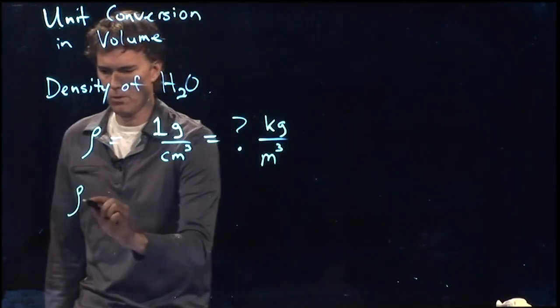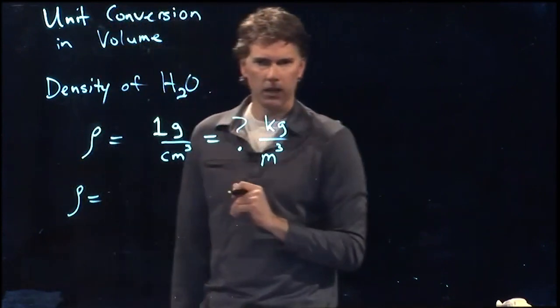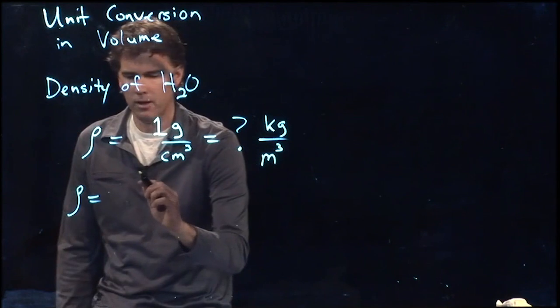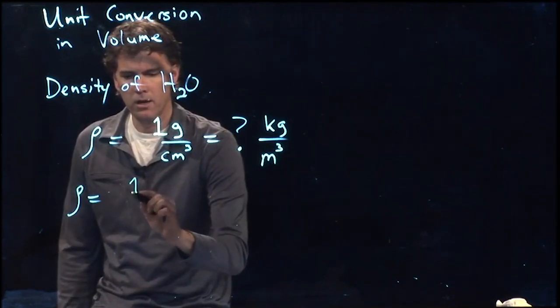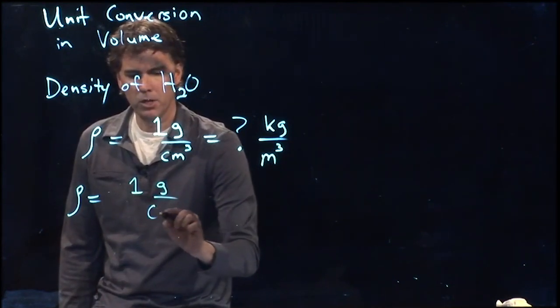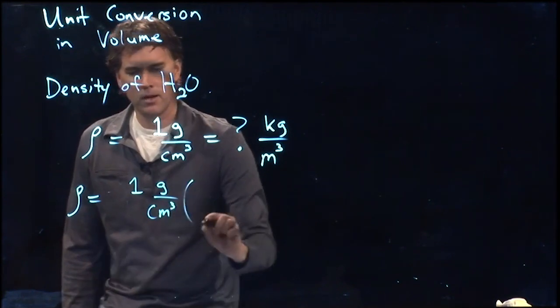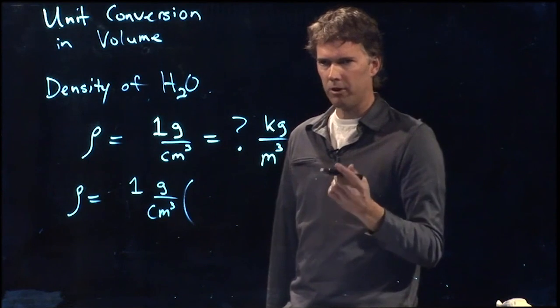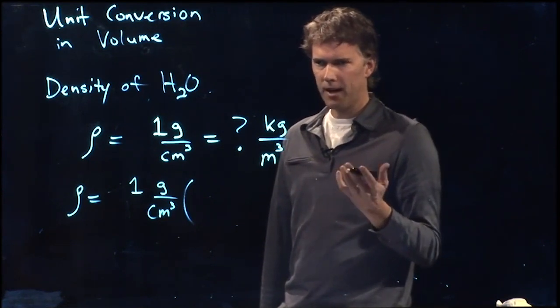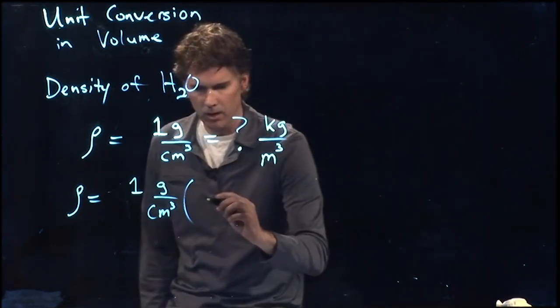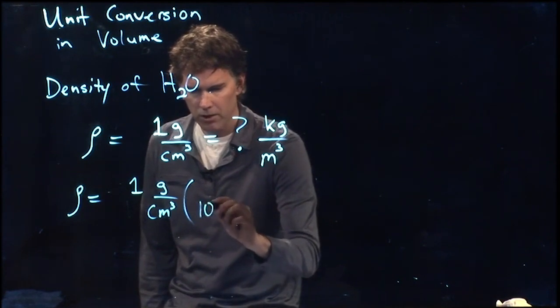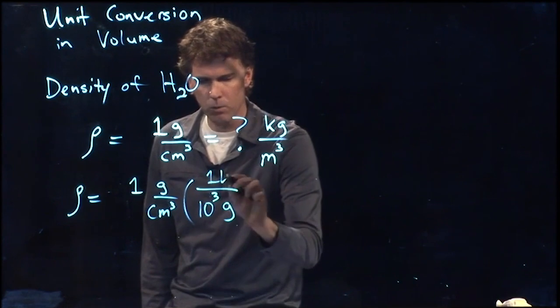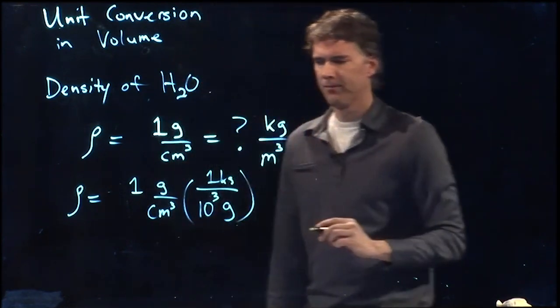So the density rho, this is the Greek letter rho. It looks like a P that fell over. We've got one gram per cubic centimeter. All right, the easy one first. Let's get gram to kilograms. How many grams are in a kilogram? A thousand. It's right there in the name, right? Kilo. So we have 10 to the 3 grams in one kilogram. Piece of cake.